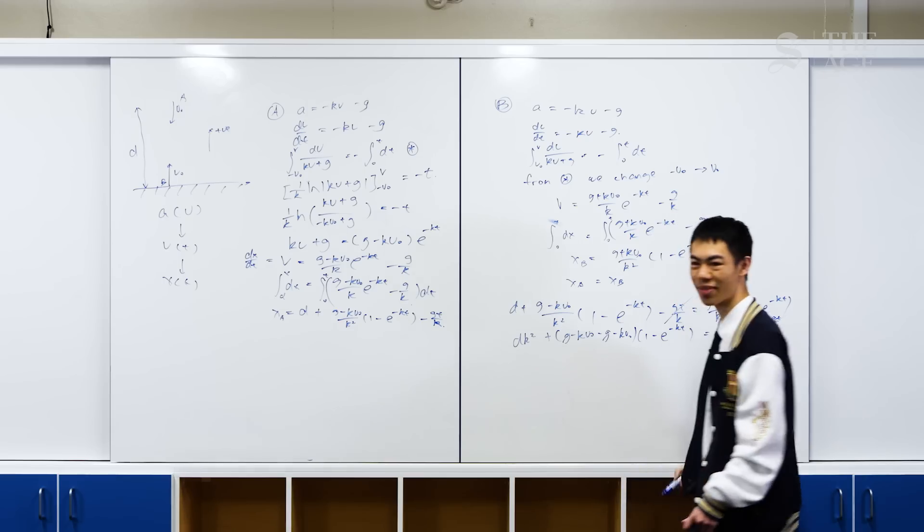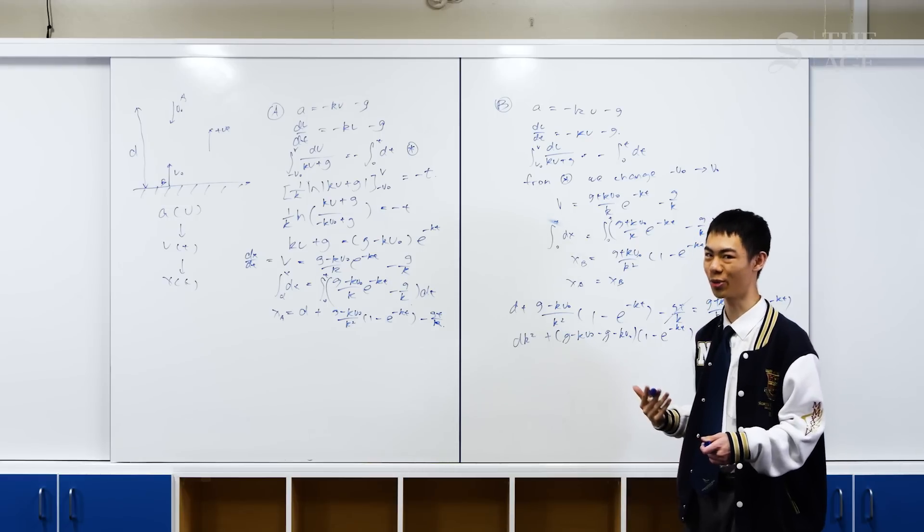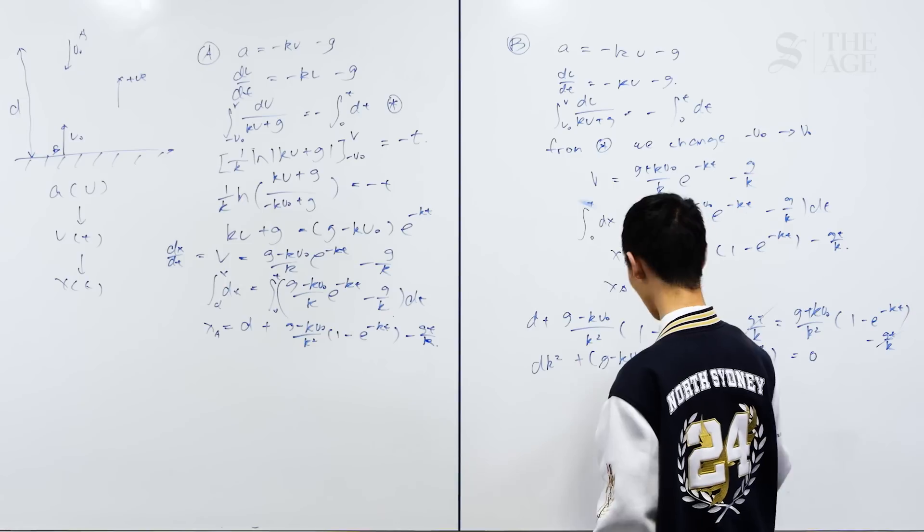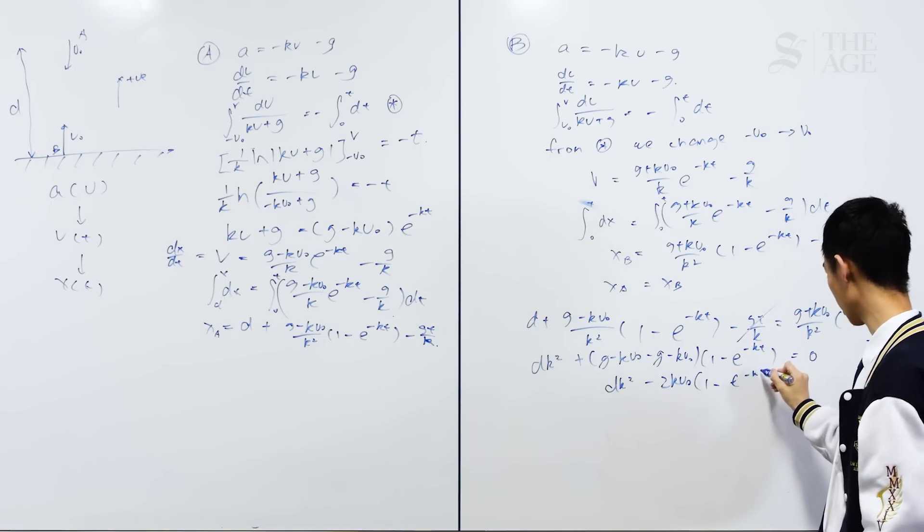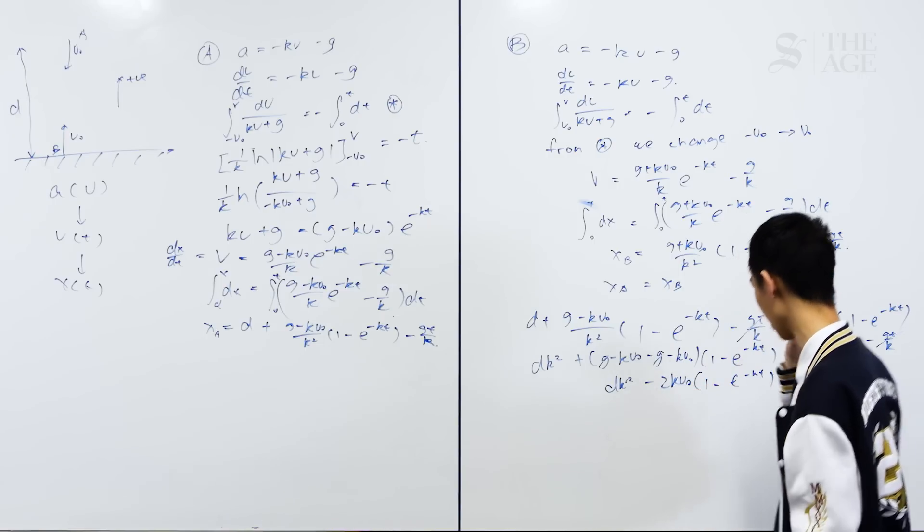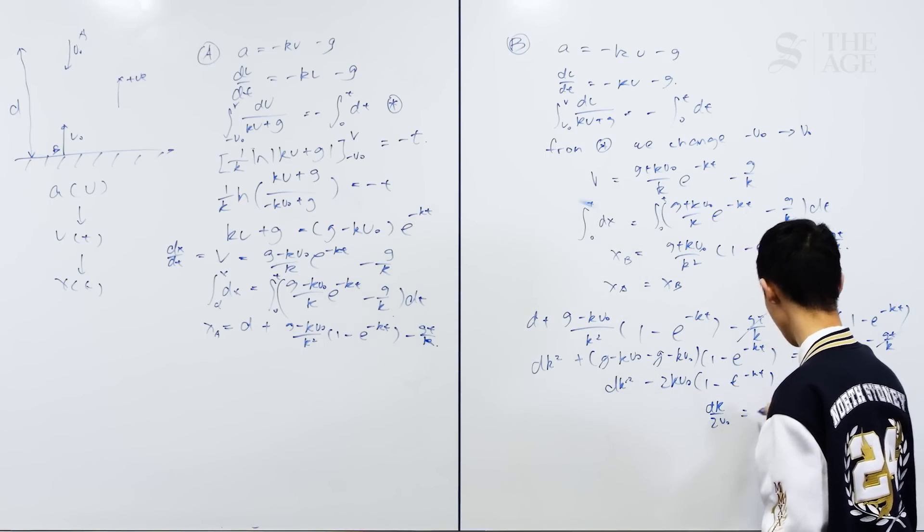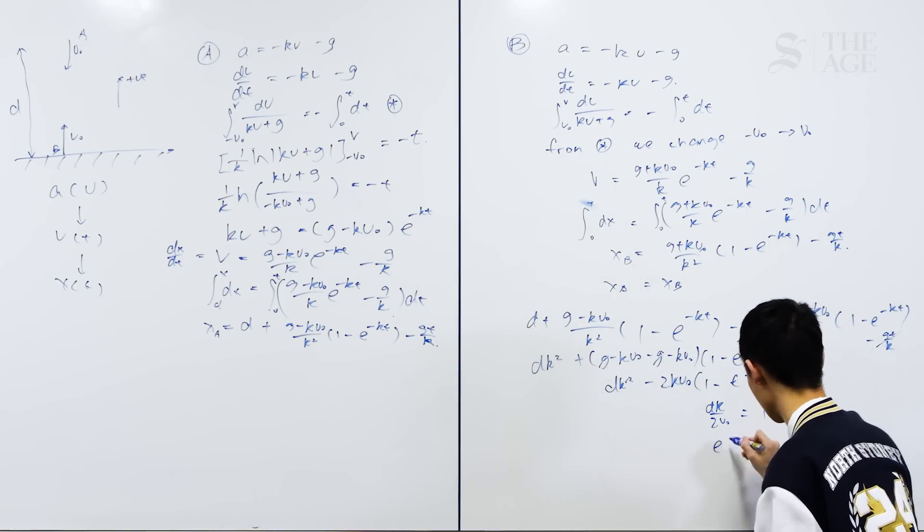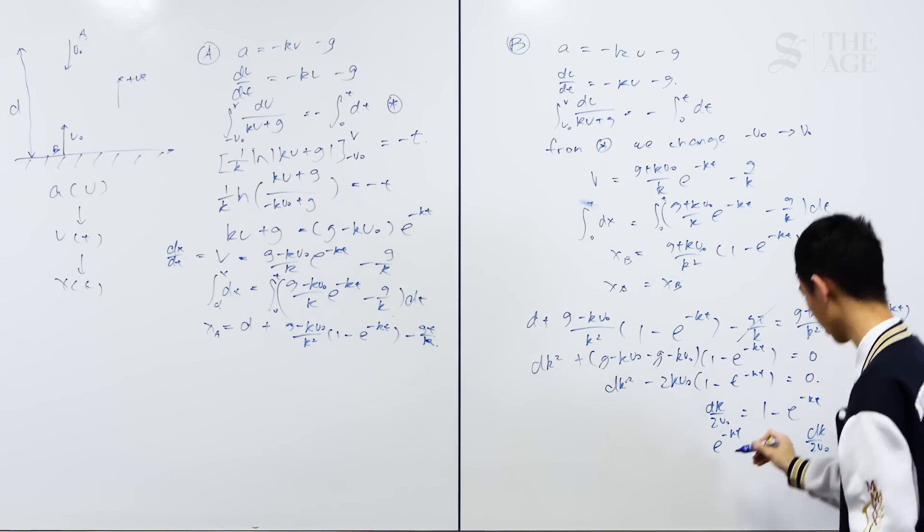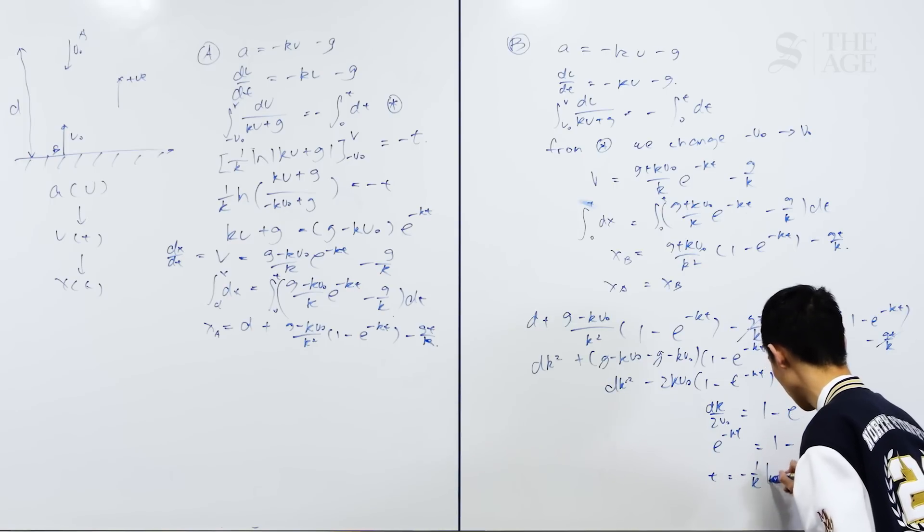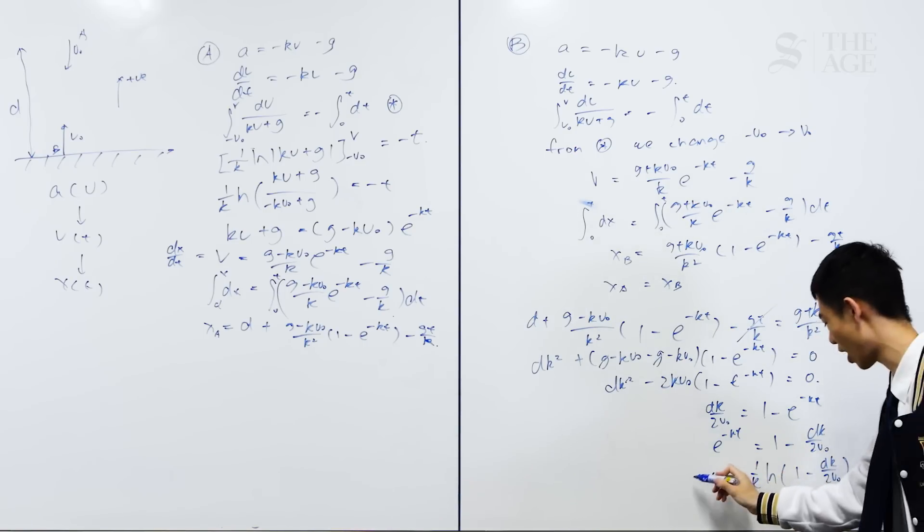Once again, we see things cancelling out. That's a very good sign for us. When complicated algebra starts cancelling out at the end, you know you probably did something right, and that's an internal verification tick you can do. We're almost there actually. So dk² - 2kv0(1 - e^(-kt)) equals zero. We have a bit more cancelling going on, and we have dk/(2v0) equals 1 - e^(-kt). That means e^(-kt) equals 1 - dk/(2v0). And the last step is t equals (-1/k)ln(1 - dk/(2v0)). That's the time when the two particles collide.